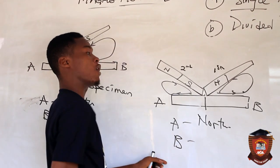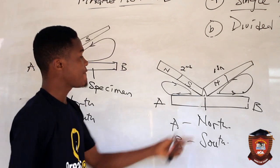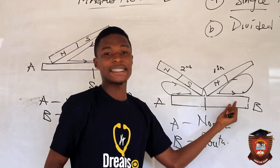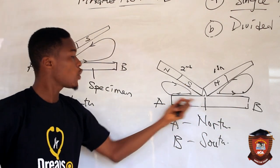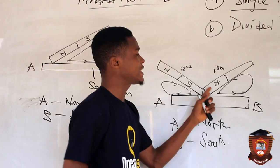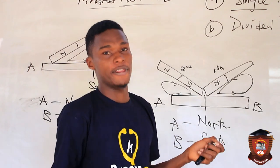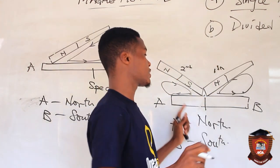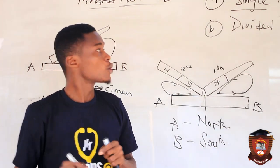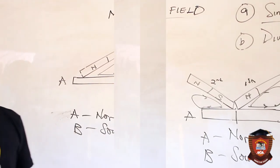So end A gains a north pole and end B gains a south pole. Always remember: the end being stroked gains the opposite polarity to the pole used to stroke it. It is not possible to stroke both ends with the same pole at the same time, as the magnetism would cancel out and the specimen would remain unmagnetized.